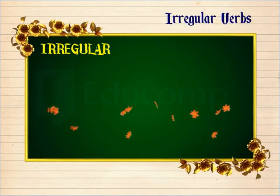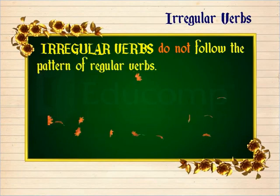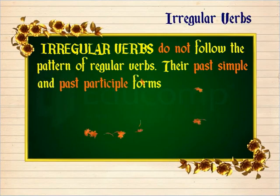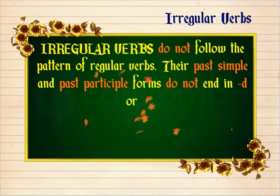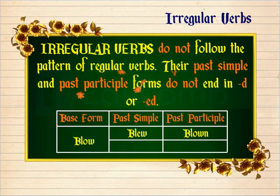Irregular verbs do not follow the pattern of regular verbs. Their past simple and past participle forms do not end in D or ED. The verb 'blow,' for instance, is an irregular verb. Its past simple and past participle forms are 'blew' and 'blown' respectively, and not 'blowed.'